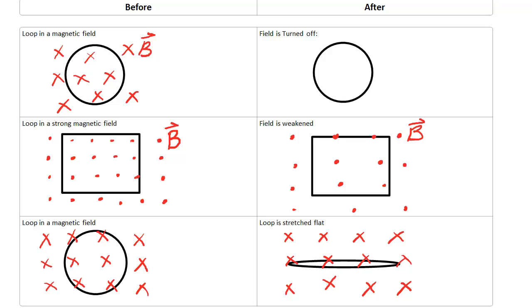One of the best ways to master Lenz's Law is to look at single loops immersed in magnetic fields as shown below. You see two columns: a before column and an after column.